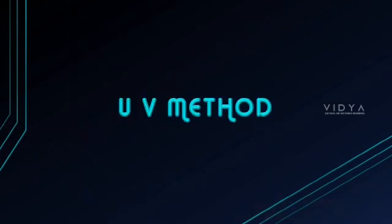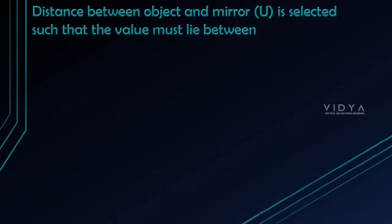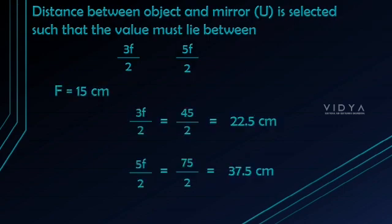UV method. First, the distance between object and mirror, u, is set. It is selected such that the value lies between 3f/2 and 5f/2, where f is the focal length 15 cm.